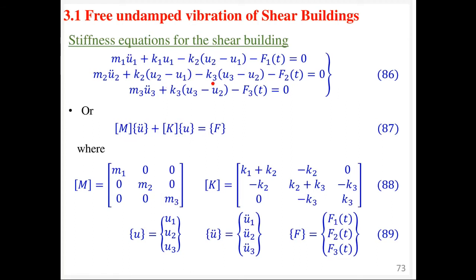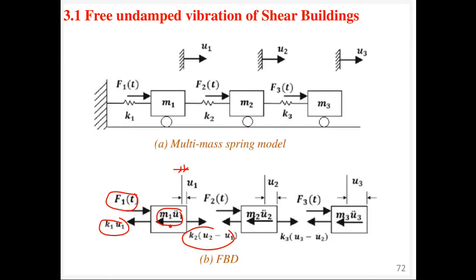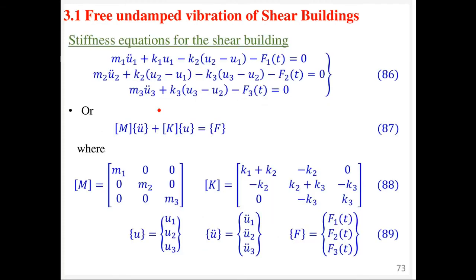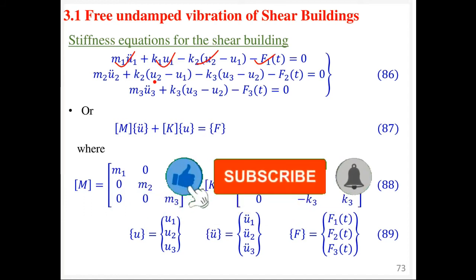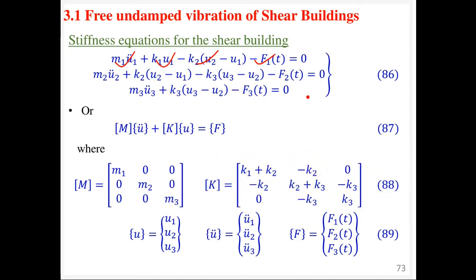Now let's see the stiffness equation for the shear building. To generate this equation, you trace the free body diagram. For the first floor level, you have the inertial force plus the column restoring force K1·U1, minus the contribution from K2, minus the externally applied force, all equal to zero. The directions are very important. For each subsequent floor level, you write a similar equation. This gives us the stiffness equations for the shear building.